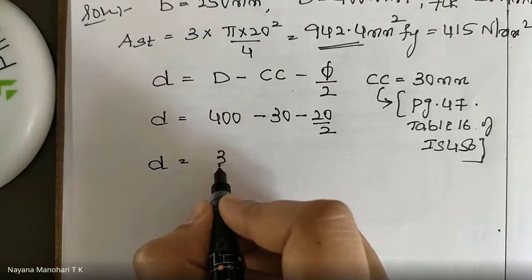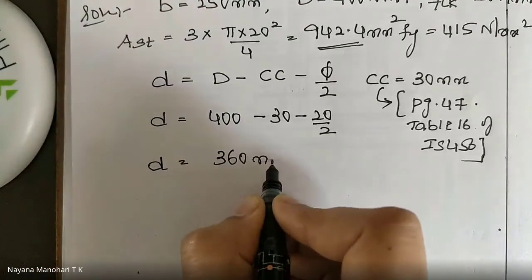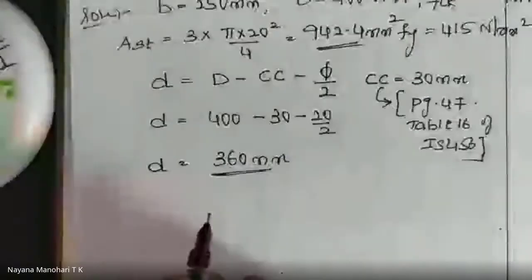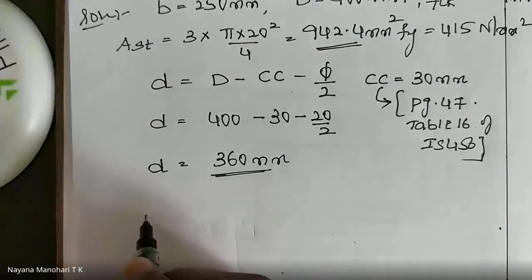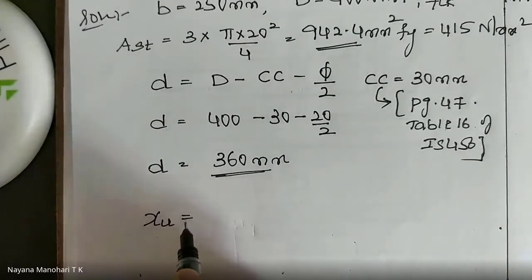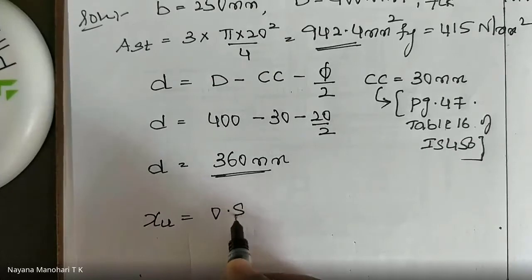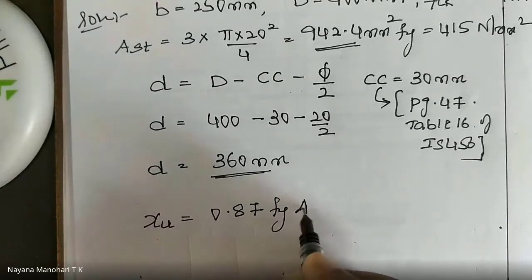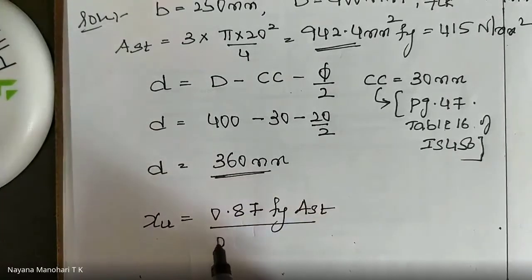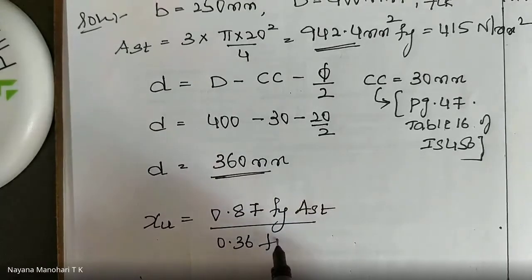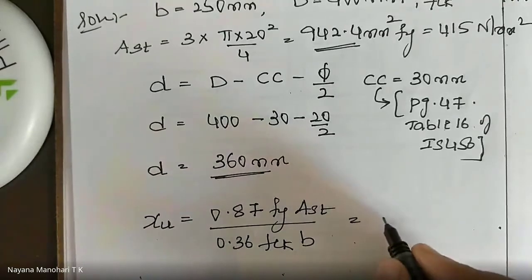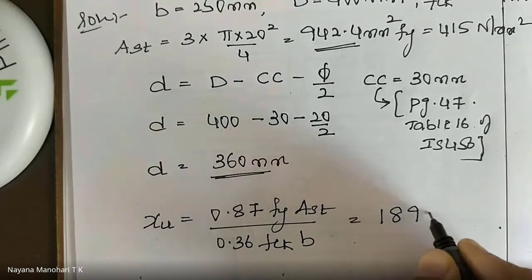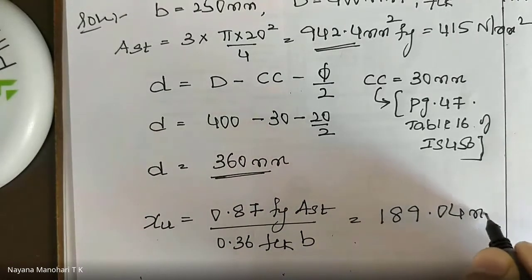The effective depth d = 360 mm. Now calculate XU using the formula: XU = (0.87 × FY × AST) / (0.36 × FCK × B). Substituting the values, XU = 199.04 mm.